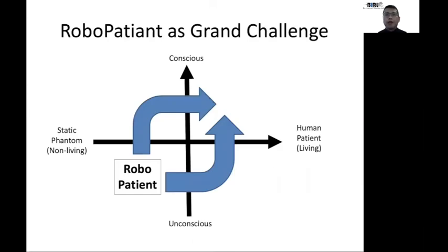The RoboPatient project is a very interestingly important project because it touches many fundamental challenges of robotics. In my view, this project is aiming to achieve a robotic system more like a living human patient and also more like a patient in the conscious state. Obviously, these two problems — what is life and what is consciousness — require much discussion and investigation. But in my view, they are prerequisite for developing the ultimate training machine for primary care practitioners.